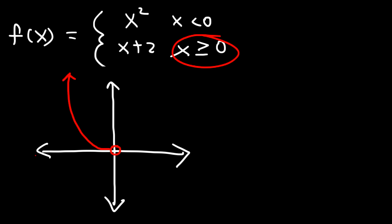Now let's move on to the next example. Let f of x equal x when x is less than or equal to 1, and x cubed when x is greater than 1. Let's first determine the continuity of this piecewise function.